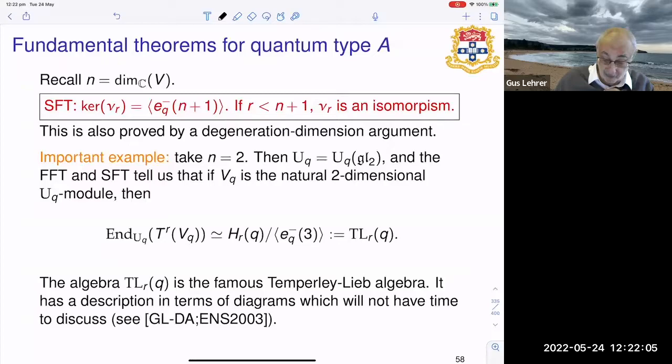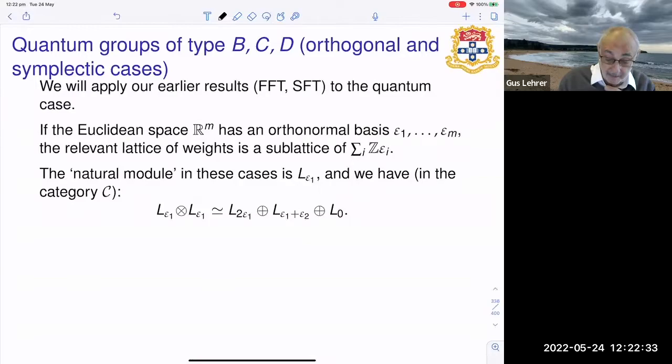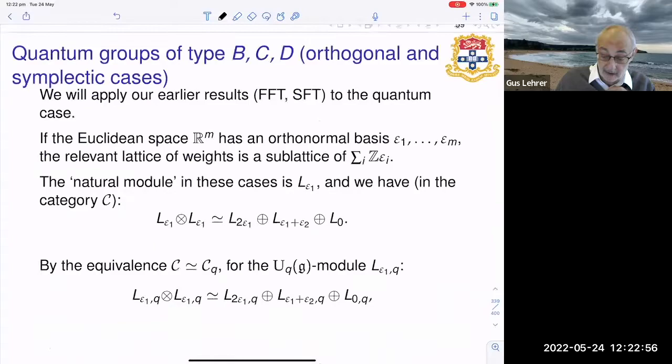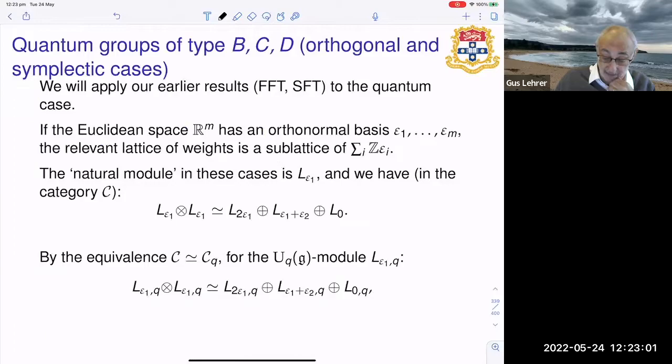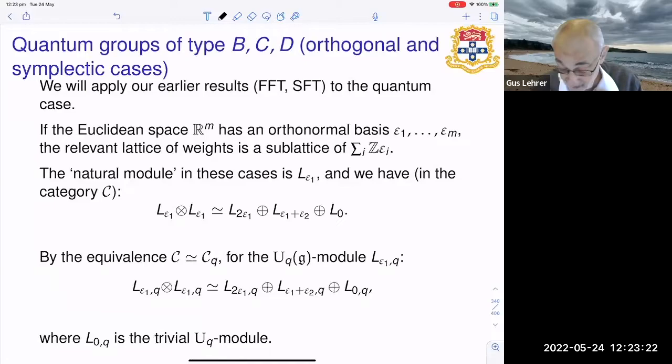The quantum groups of type B, C, and D, the orthogonal and symplectic cases, can be treated in a similar way, except that there are more summands in the tensor square. So for example, I think this is the orthogonal case, so you have three summands, and in the symplectic one you also have three summands. And it's easy to compute what the eigenvalues of the R matrices are for these three summands.